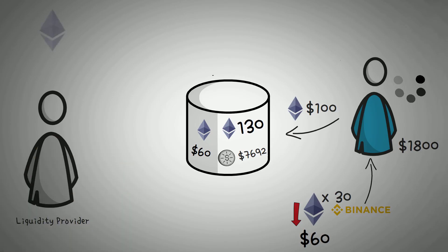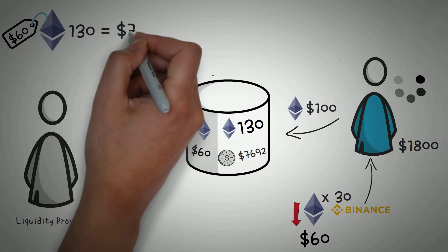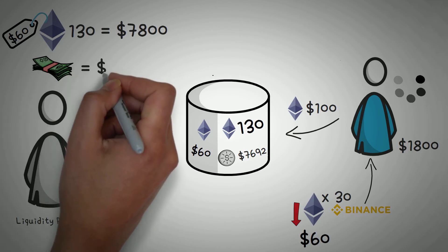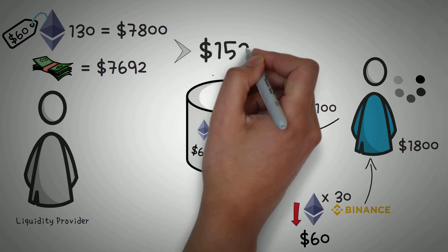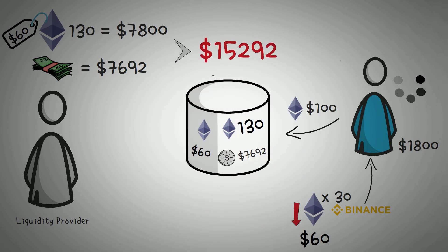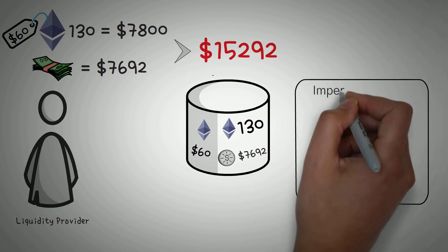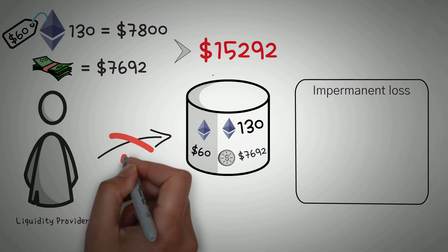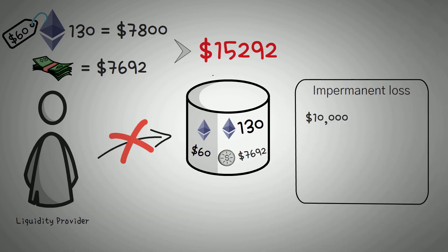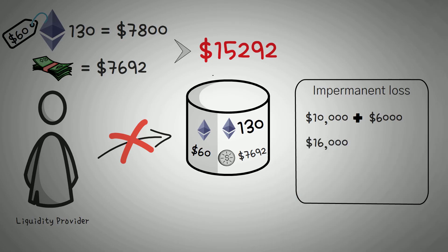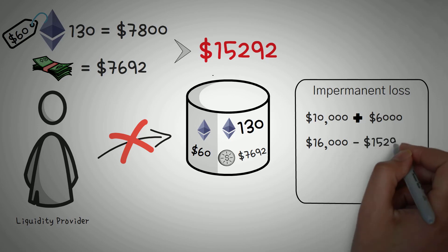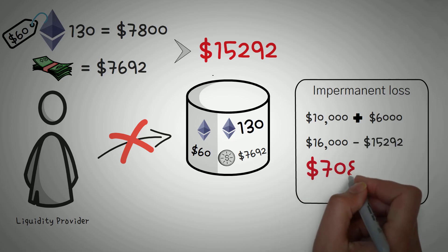Now let's take a look at our liquidity provider. They have 130 Ethereum at a market price of $60. This means that the value of Ethereum in their portion of the pool is $7,800, and the cash value of the pool is $7,692. This means the value of the assets in the liquidity pool equals $15,292, which is a sharp loss from the initially invested $20,000. Now let's calculate their impermanent loss. If they didn't invest those initial assets, they would have had $10,000 cash and 100 Ethereum, which the 100 Ethereum would now be worth $6,000. Doing some simple math, we realize they would have had $16,000 if they didn't invest in the liquidity pool. So $16,000 minus $15,292 is an impermanent loss of $708.